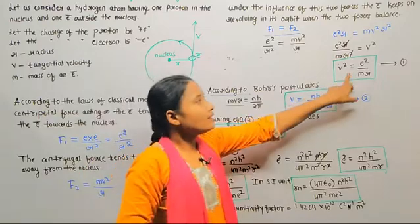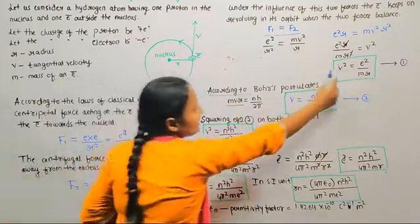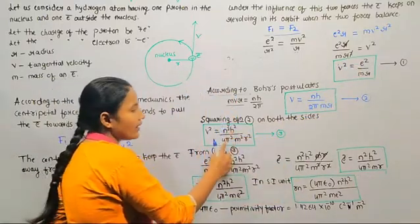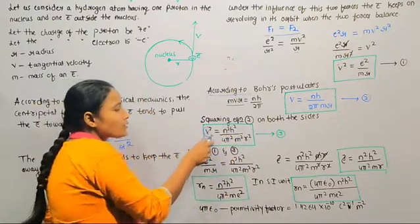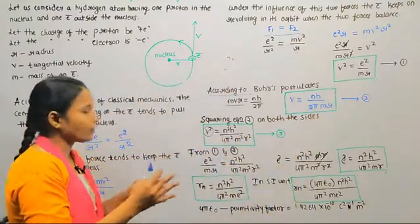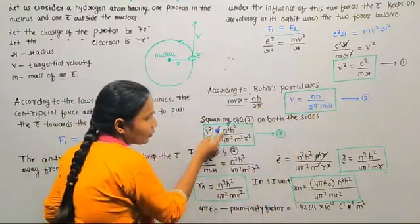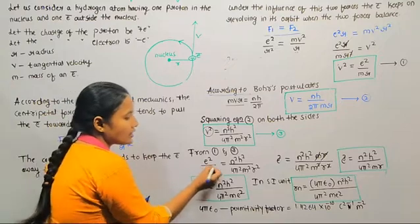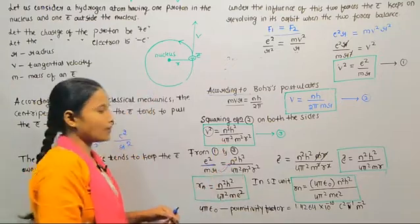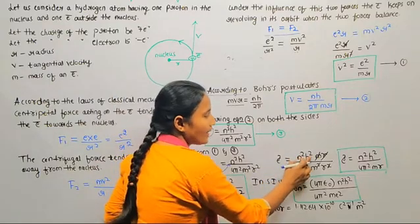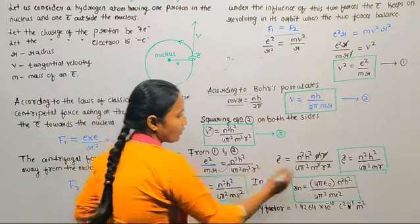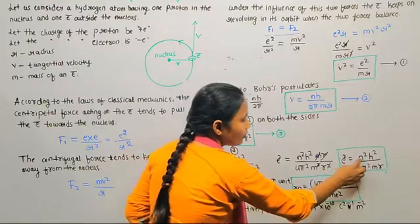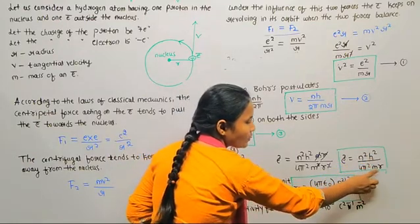From equation 1 and equation 3: v square is equal to e square by mr, and v square is equal to n square h square divided by 4 pi square m square r square. Equating these two: e square divided by mr is equal to n square h square divided by 4 pi square m square r square. Cross-multiplying: e square is equal to n square h square m r divided by 4 pi square m square r square. m and one m get cancelled, r and r get cancelled, giving e square is equal to n square h square divided by 4 pi square m into r.